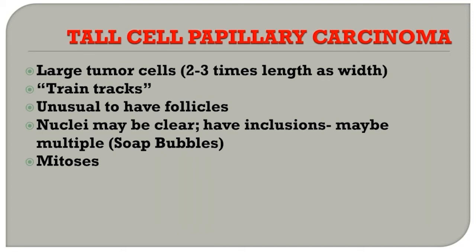It is unusual to have tall cell papillary carcinoma show follicular differentiation. The nuclei may or may not be clear, but they have inclusions — they have a lot of inclusions. In cytologic preparations, you may guess that this might be a tall cell papillary carcinoma by the fact that some of the nuclei have inclusions. This has been called by some as soap bubble-looking cells.